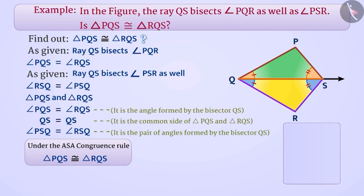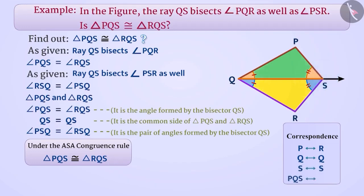Under the correspondence: P corresponds to R, Q corresponds to Q, S corresponds to S, and triangle PQS is congruent to triangle RQS. Always remember to pay attention to correspondence while showing the congruence relation.